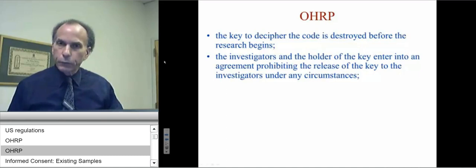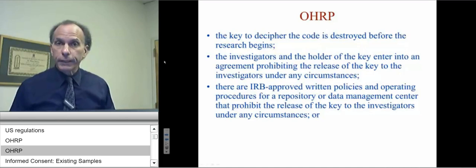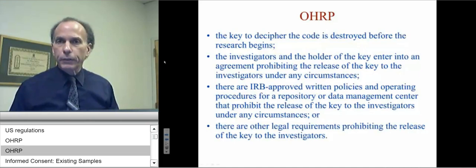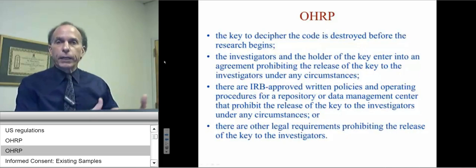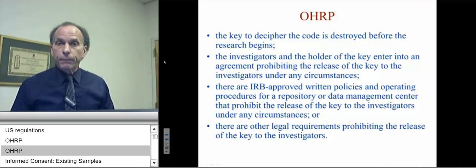Or, the investigators and the holder of the key enter into an agreement prohibiting the release of the key to the investigators under any circumstances. Or there are IRB-approved written policies and operating procedures for a repository or data management center that prohibit the release of the key. Or there are legal requirements prohibiting the release of the key. For example, if I obtain blood samples from the Red Cross, the Red Cross is under a legal mandate not to release personal identifiers to me, so my IRB should consider me not doing human subjects research.